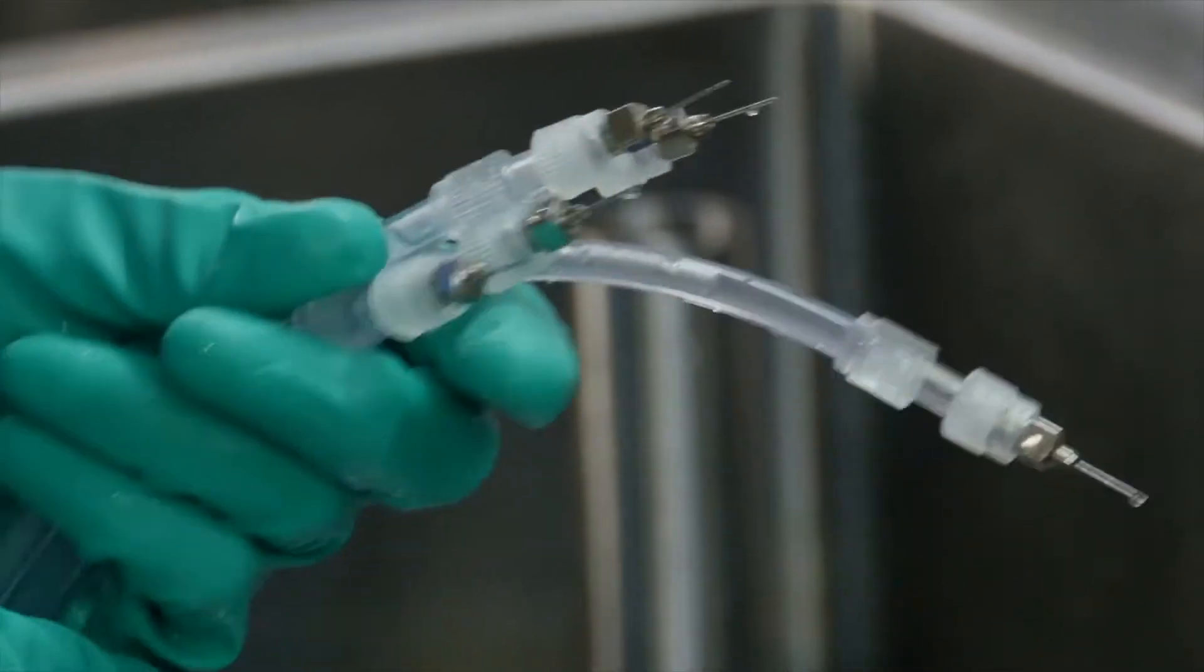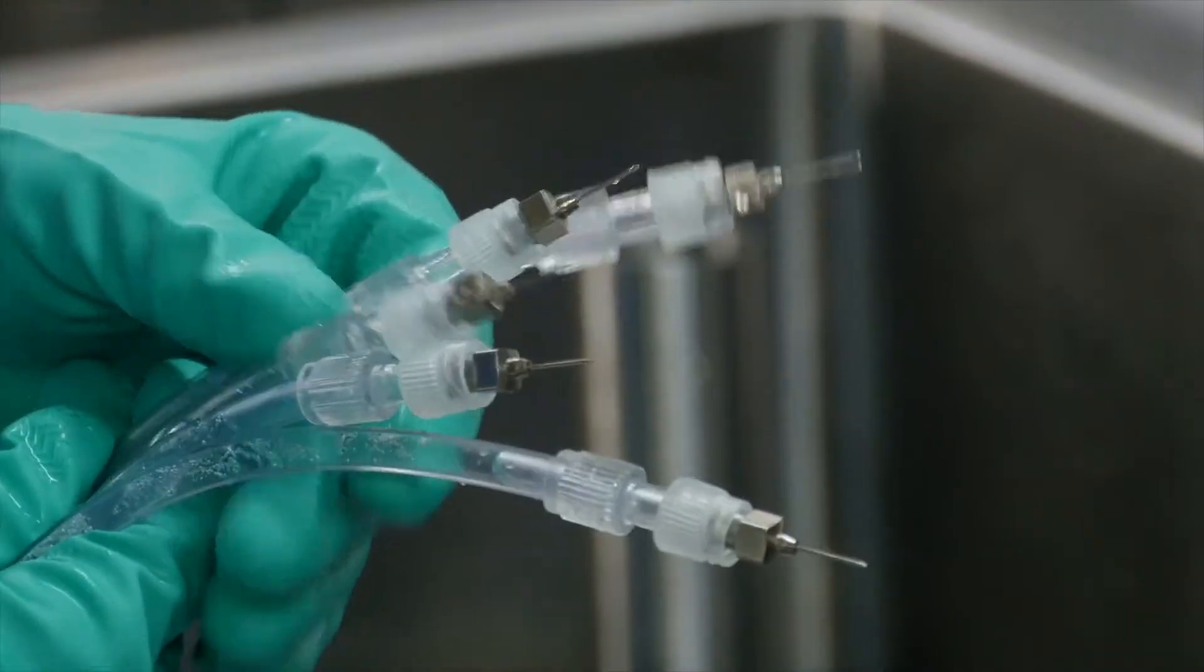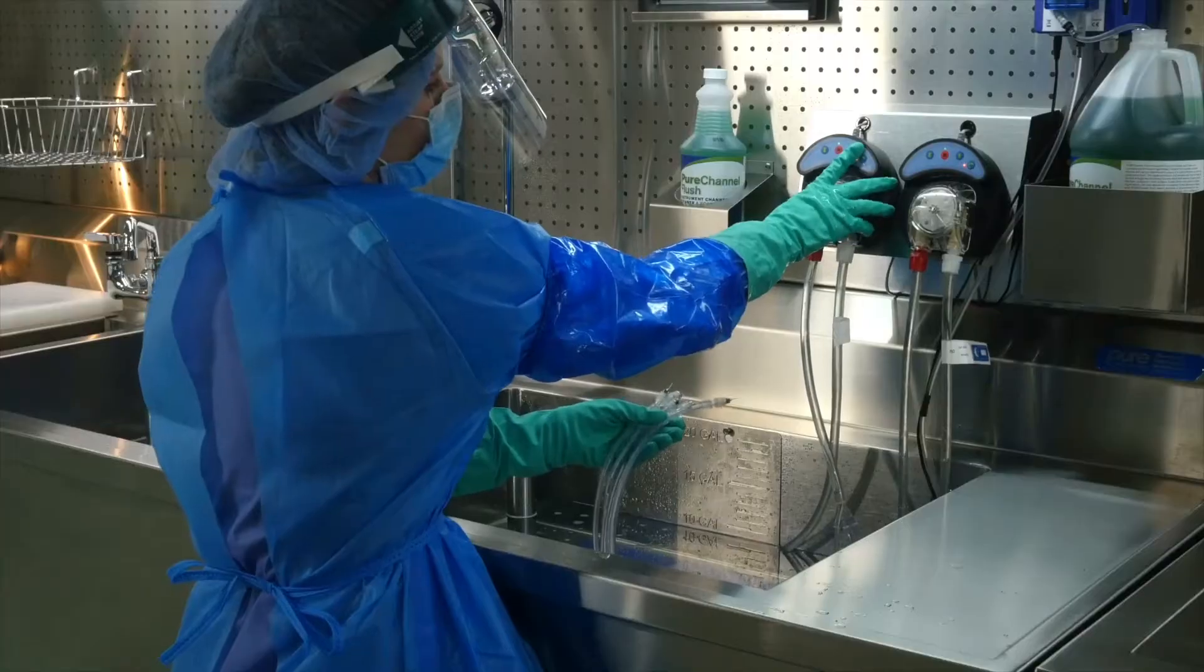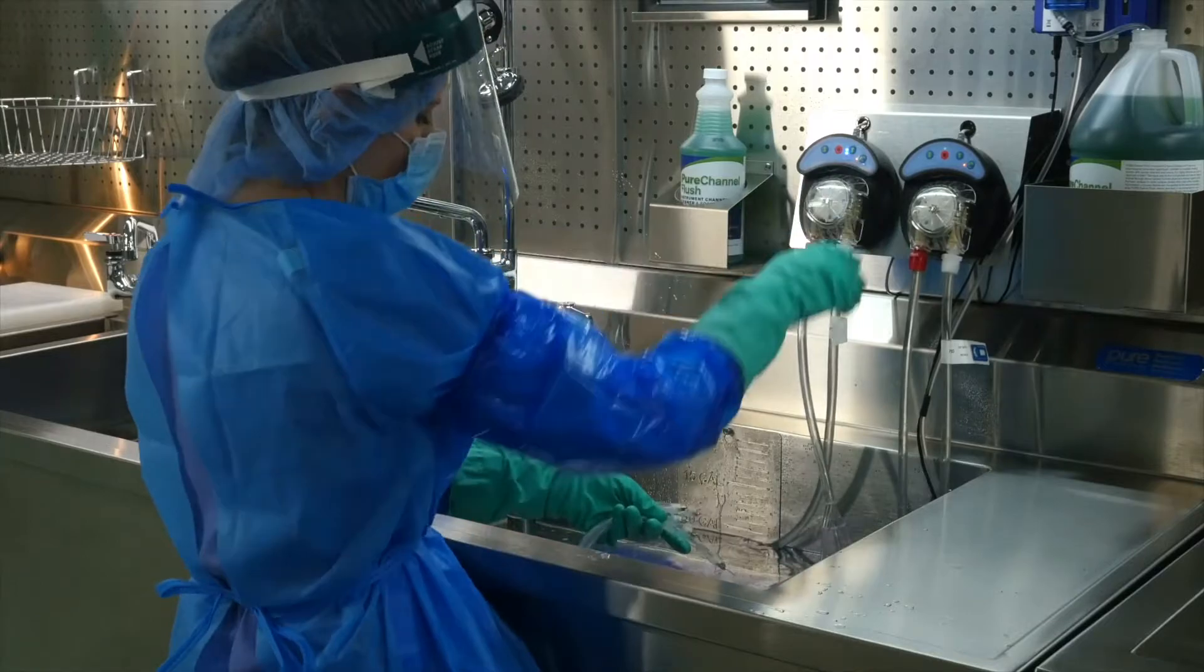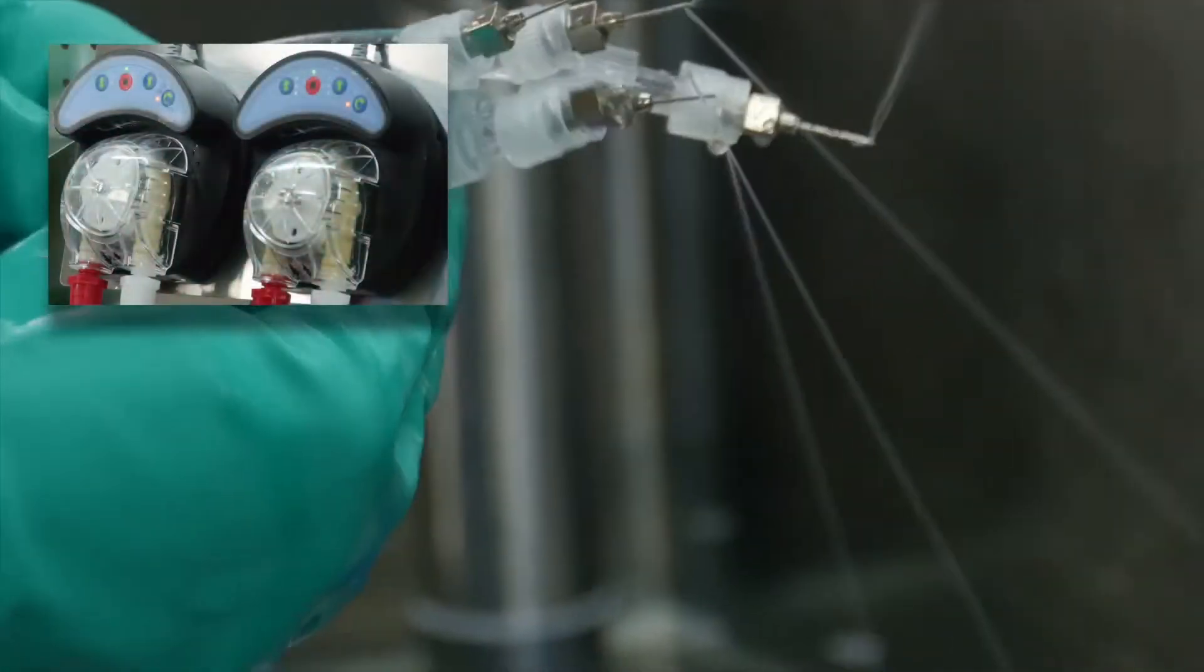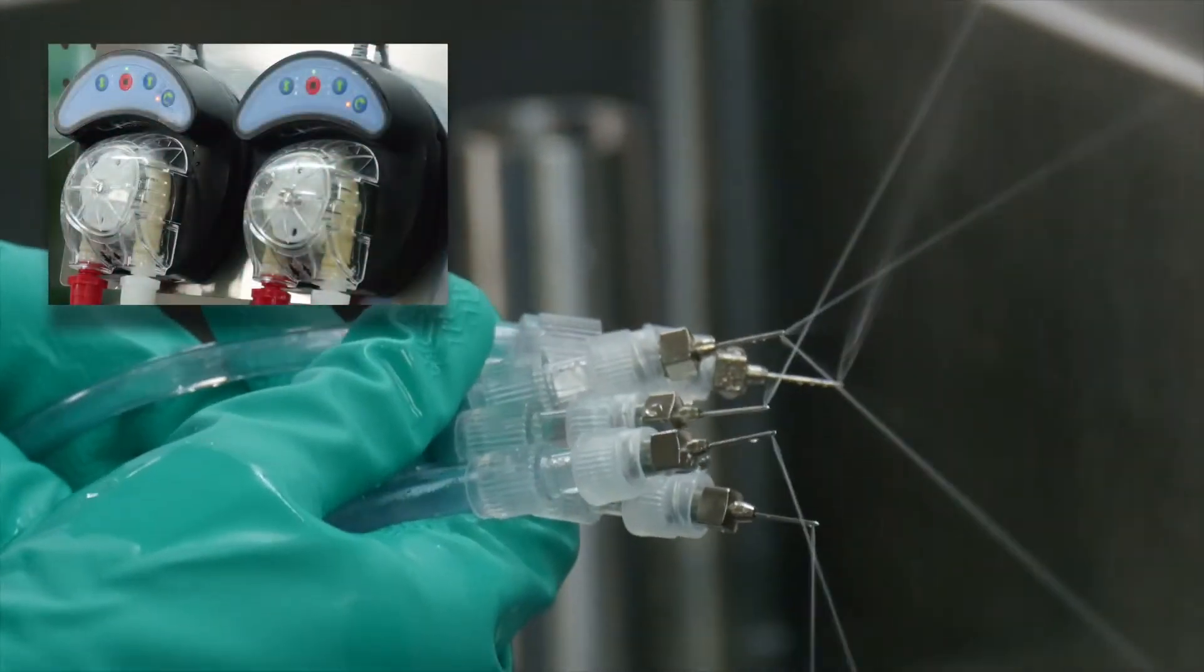The smallest lumens should be flushed on low speed, which is set by pressing the dial button once, illuminating one LED light. Suction tips and eye instruments are good examples of tiny cannula.